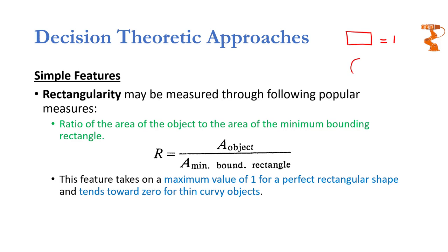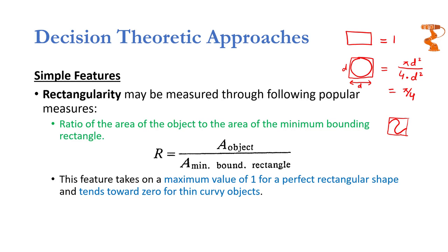For a circular object, the minimum bounding rectangle has dimensions d by d, giving area d squared. The area of the circle is pi*d²/4, so rectangularity equals pi/4 for circular objects. If the object becomes thin and curvy, the area of the minimum bounding rectangle increases greatly while the object area stays small, giving values less than pi/4, tending towards 0. So rectangular objects have rectangularity near 1, while thin curvy shapes have rectangularity approaching 0. Another related feature is aspect ratio: the ratio of the width to the length of the minimum bounding rectangle.